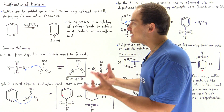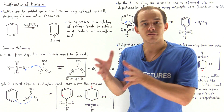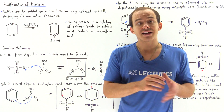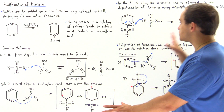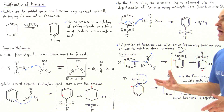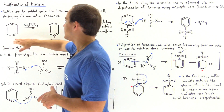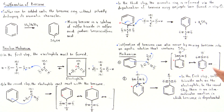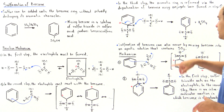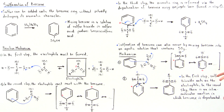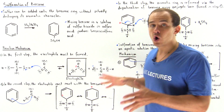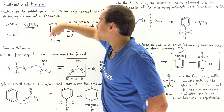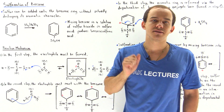Sulfonation of benzene is the process by which benzene sulfonic acid is formed from benzene without destroying the aromatic character of benzene. There are two types of reactions that can take place: if benzene is mixed with sulfur trioxide and sulfuric acid, the three-step reaction pathway is followed; however, if benzene is placed into an aprotic solution containing only sulfur trioxide, this two-step mechanism takes place. In both reactions, the same benzene sulfonic acid is formed, containing a fully conjugated, aromatic benzene ring.